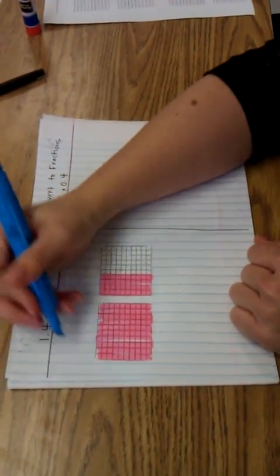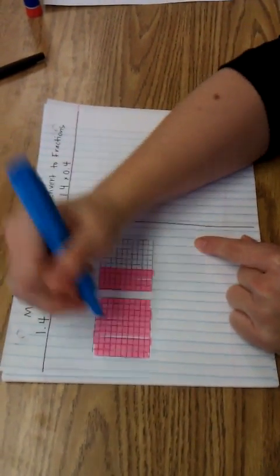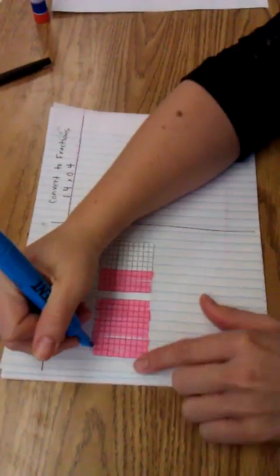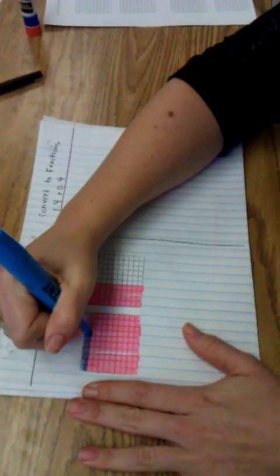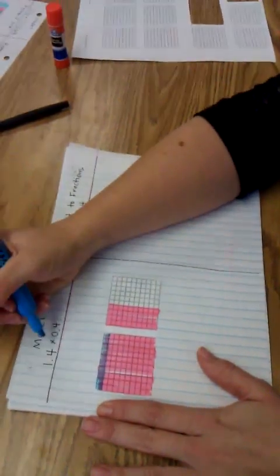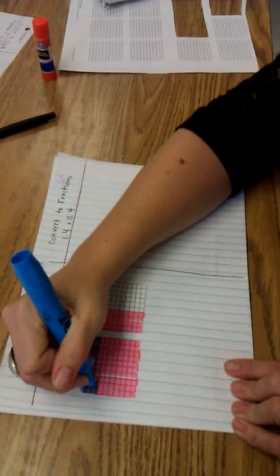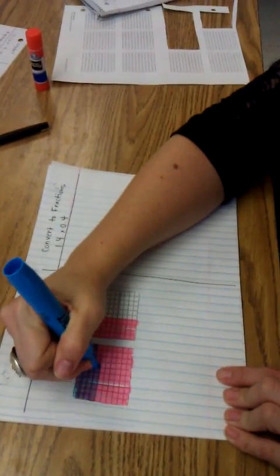Now I need to represent 4 tenths on both of these. So I'm going to shade 4 tenths, going the opposite way. There's one tenth, two tenths, three tenths, four tenths.